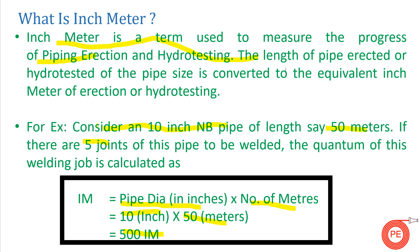In inch meter we don't need to worry about the number of joints. It measures how much length of pipe erection has been done on a particular day. It is calculated by this inch meter formula.